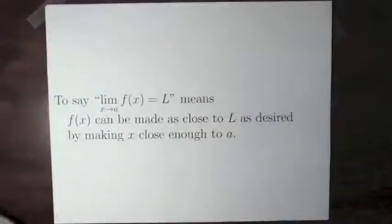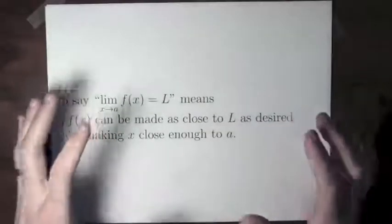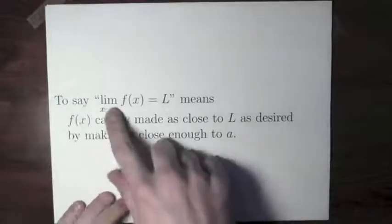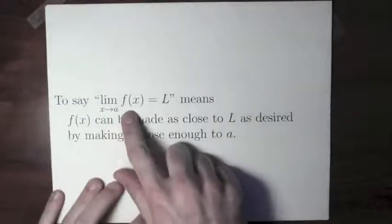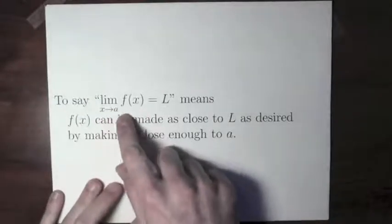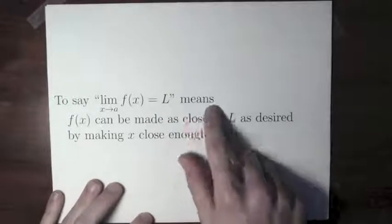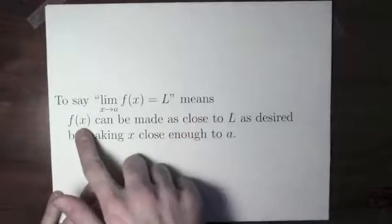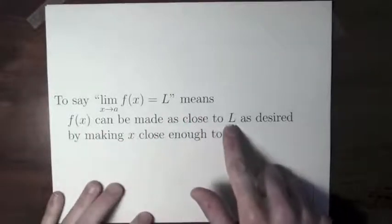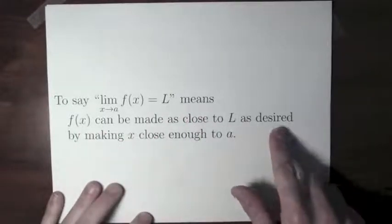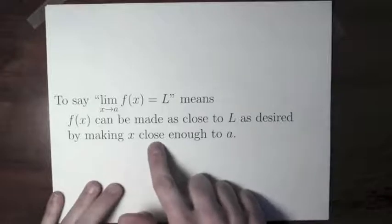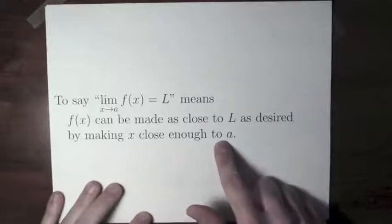Limits are probably the most important concept in this course, so we should really have a definition of what we mean by limit. To say that the limit of f of x as x approaches a is equal to l means that f of x can be made as close to l as desired by making x close enough to a.